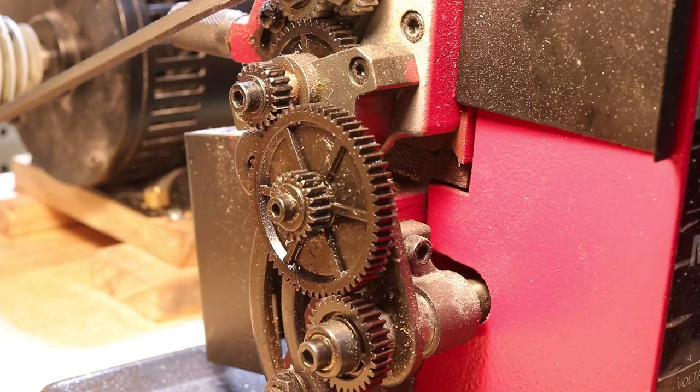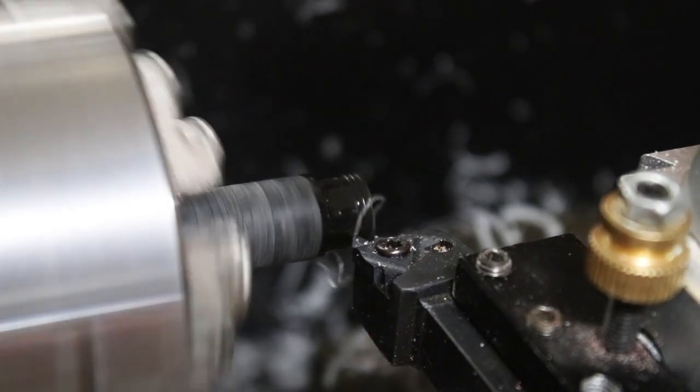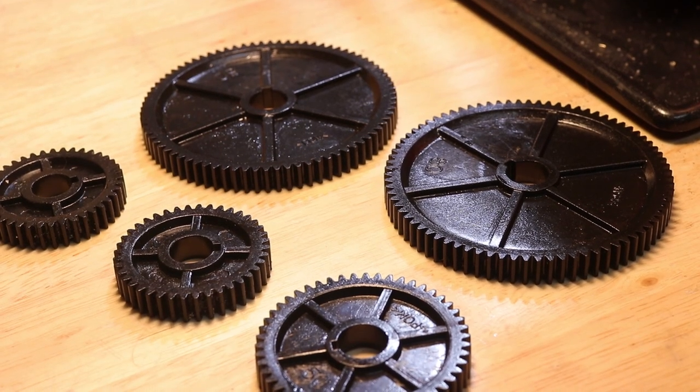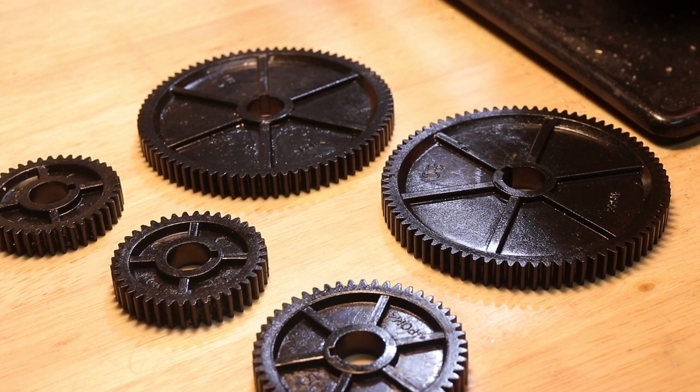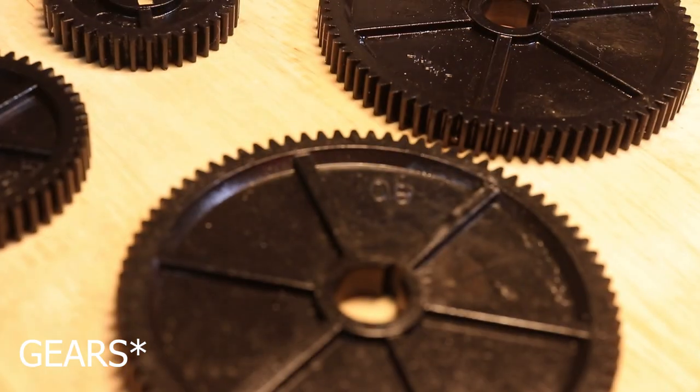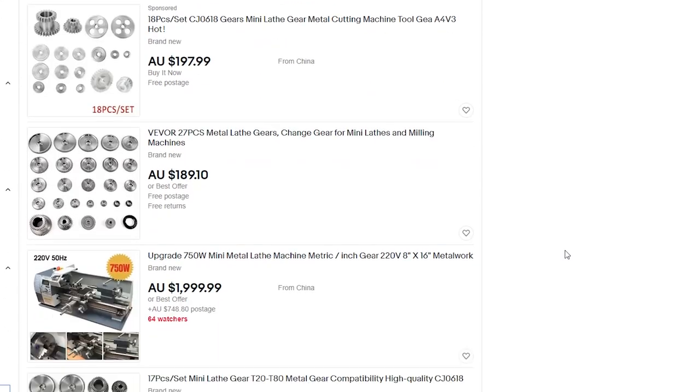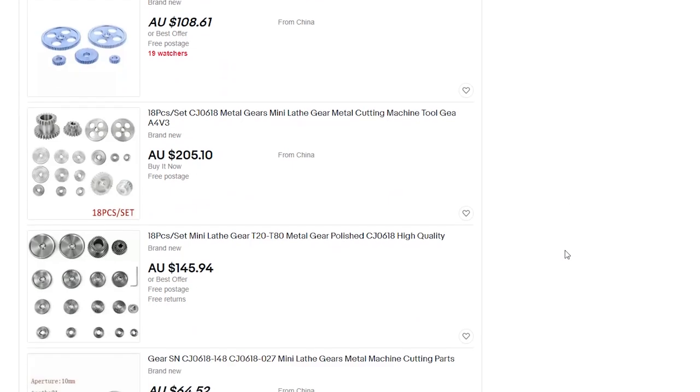Tip number four: the lathe is going to come with a set of acetyl plastic gears used to drive the gearbox which drives the threading screw. These gears have had quality issues in the past, so make sure to check each gear for defects or cracks. Also, whilst the plastic gears are adequate for light use, if you do plan on doing a lot of thread cutting, I would opt to buy a set of metal gears for the lathe which you can find online.